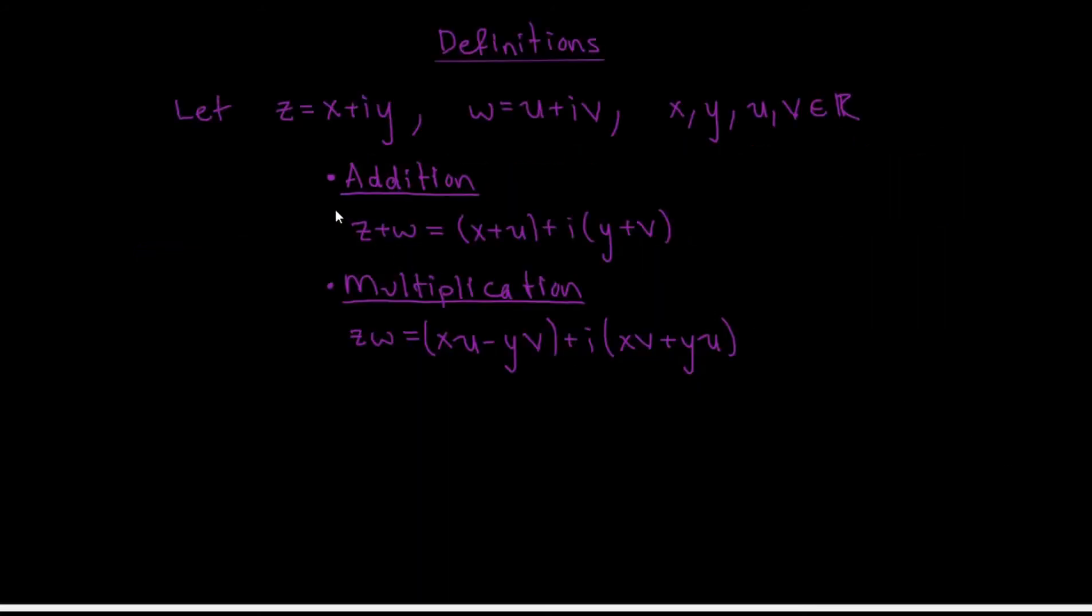Now, for some basic definitions, let's suppose that you have two complex numbers, z equals x plus i y, and w equals u plus i v. How do you add and multiply them together? Well, first of all, the sum z plus w is defined to be the new complex number whose real part is the sum of the real parts of z and w, and whose imaginary part is the sum of the imaginary parts of z and w.